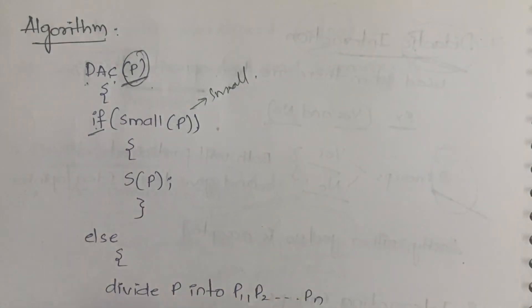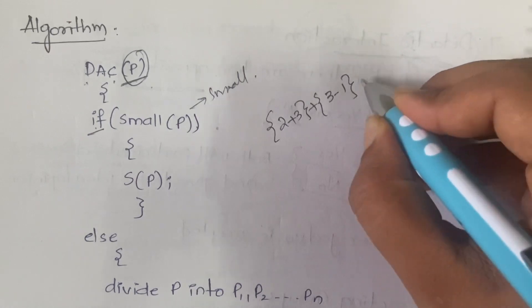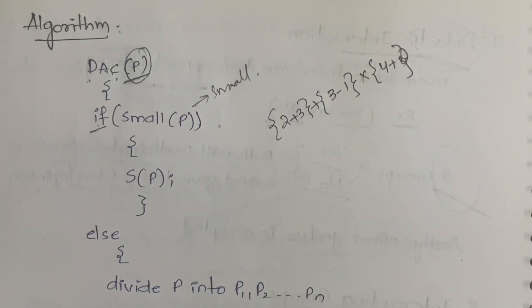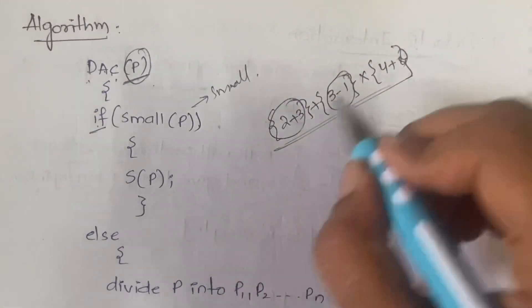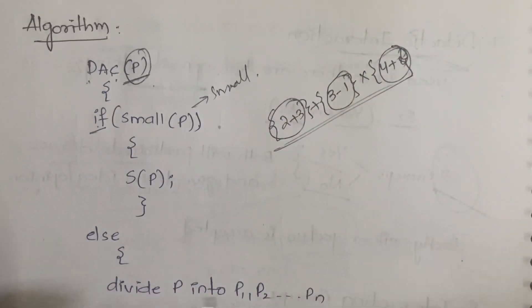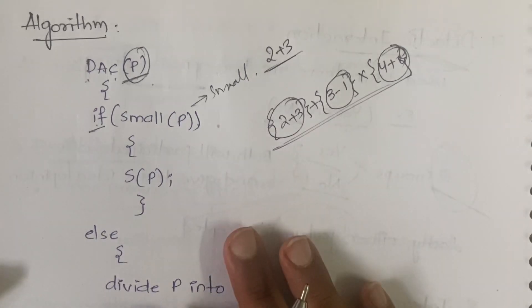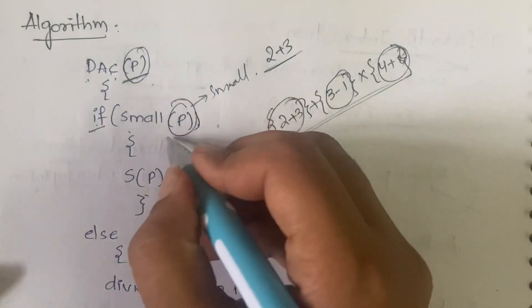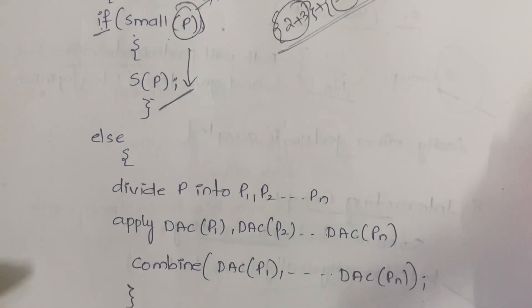For example, you have an expression like 2+3+3−1×4+8. It has multiple parts: first add 2 and 3, subtract 3 and 1, add 4 and 8, then combine them all. But if you have only 2+3, you cannot divide it further — you just add it directly. So if P is of a smaller size, you can directly write the solution for P.